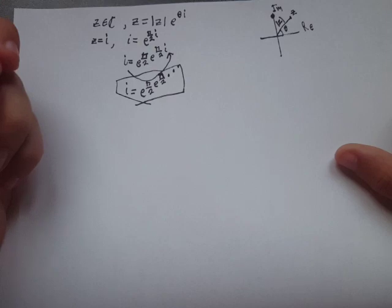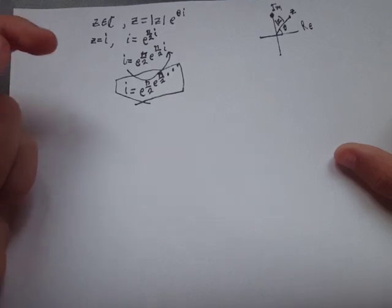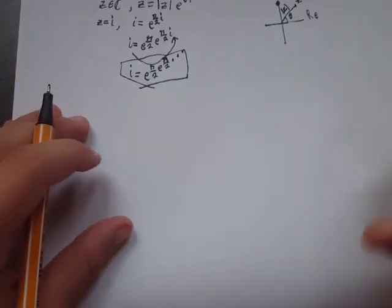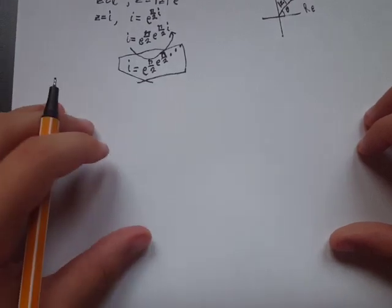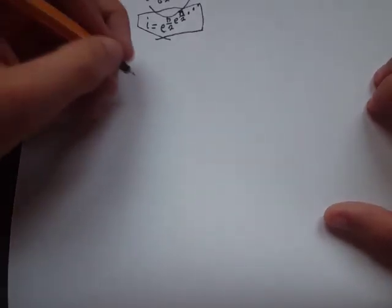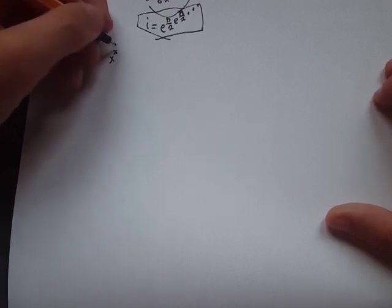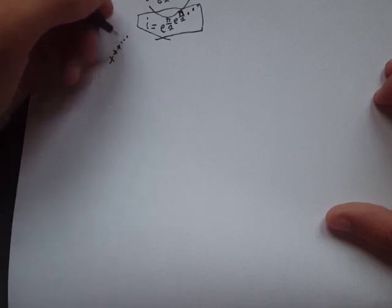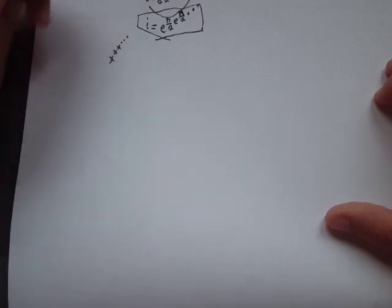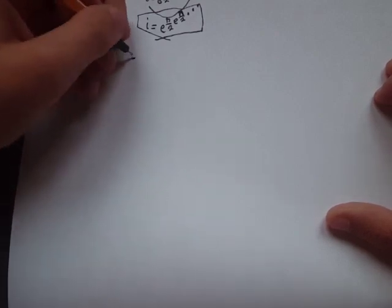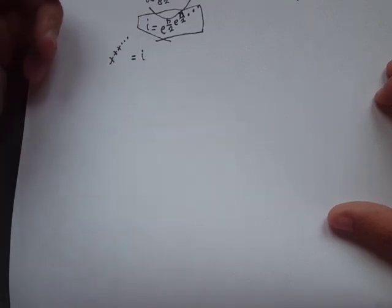But if you're not convinced yet, here is another method that works as well to confirm our result. Let's say an infinite tetration of x, or an infinite power tower where x is a real number, equals i. Now we have to solve for x.